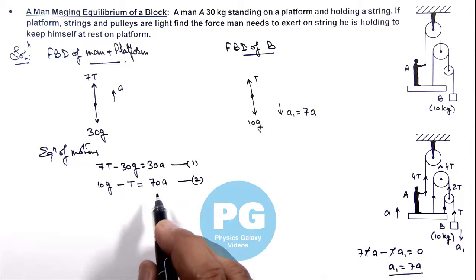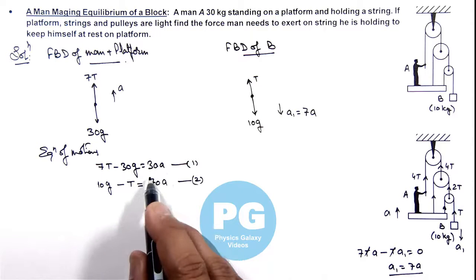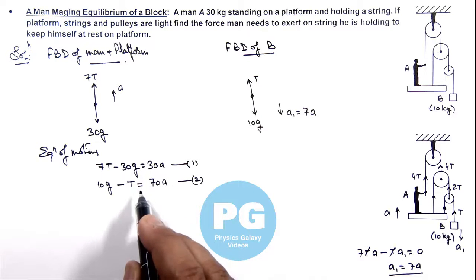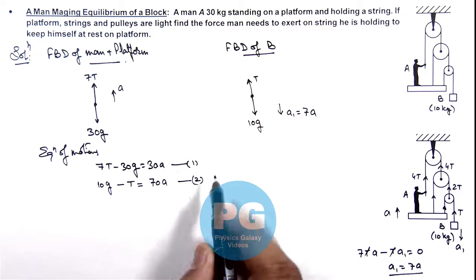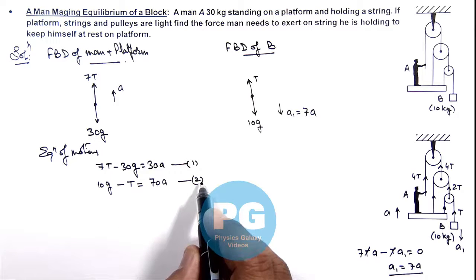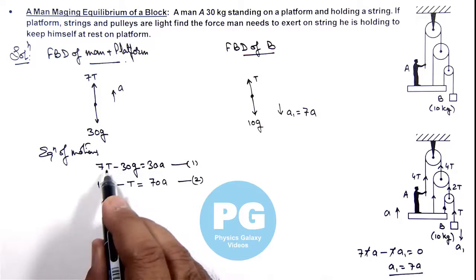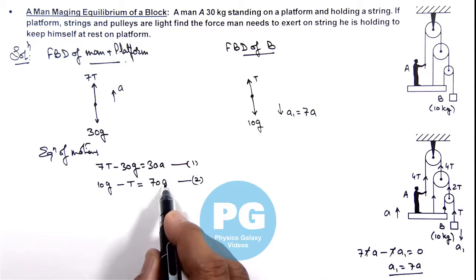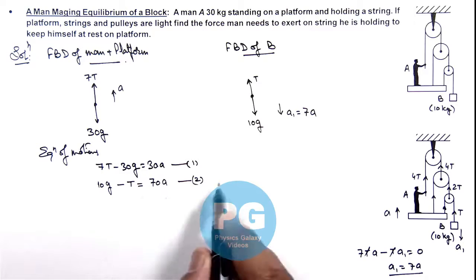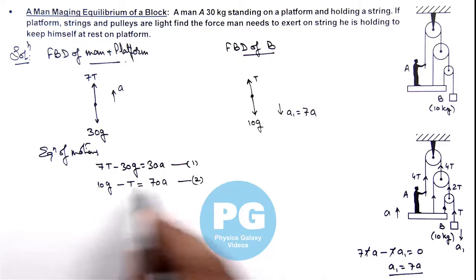Now to eliminate the value of ay and get the value of T, we can multiply this second equation by 7 and add these two, so first T will be eliminated and we can get the value of ay, and later on substituting ay we get the value of T.